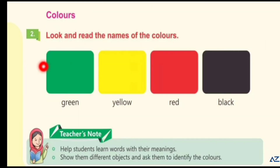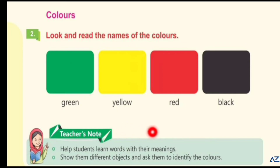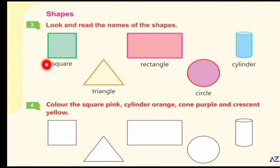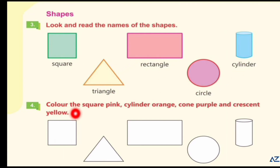Look and read the names of the colors: green, yellow, red, black. Teacher's note: help students learn words with their meanings, show them different objects and ask them to identify the colors. Look at the pictures and read the names of the shapes: square, triangle, rectangle, circle, cylinder. Color the square pink, cylinder orange, cone purple, and crescent yellow.